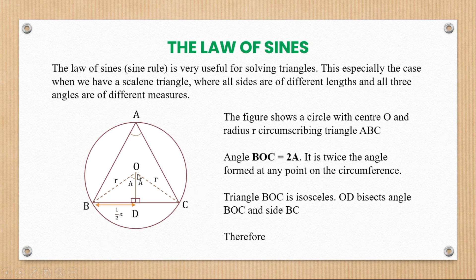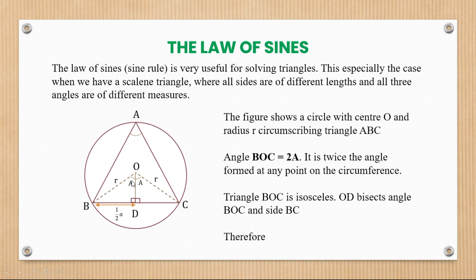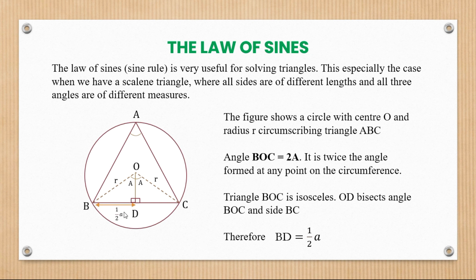This triangle here in the middle — triangle BOC — is actually isosceles, because this side is equal to that side. An isosceles triangle is one where two sides are equal. OD bisects angle BOC and side BC. So therefore, we can see that BD is equal to one half of A, because we've chosen to represent the line BC by small letter A. This portion, BD, is going to be equal to half of A.